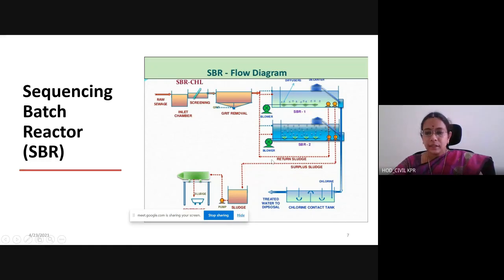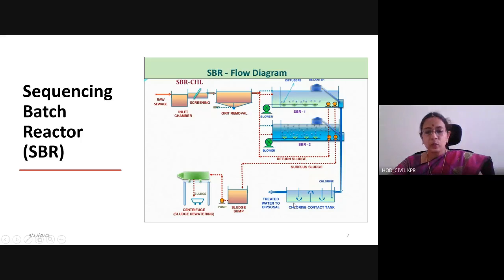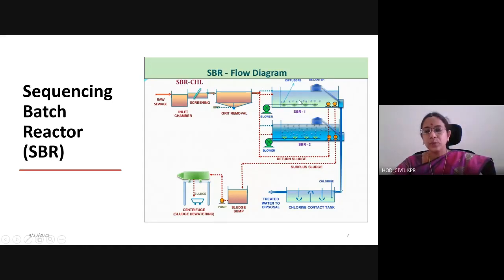The surplus sludge is taken out through a sludge pump or sent to a centrifuge for sludge dewatering, and then taken out as manure or for disposal. SBR1 and SBR2 can be followed by SBR3, SBR4 depending upon the characteristics of the wastewater. From all these treatment stages, it can go to a contact tank if required, and then to filtration, or directly to disposal. The difference between a normal STP plant and a Sequencing Batch Reactor is that primary settling, aeration, and secondary settling are all put together, so no separate maintenance or separate components are needed — it is a compact system.